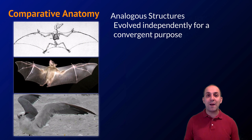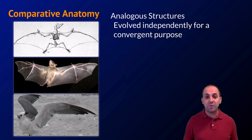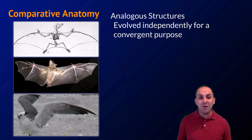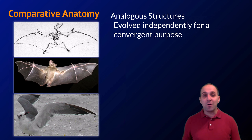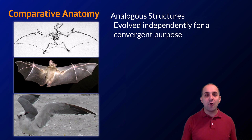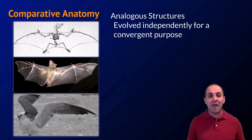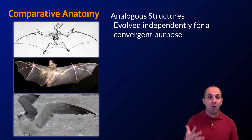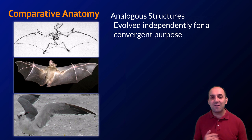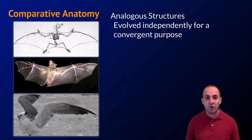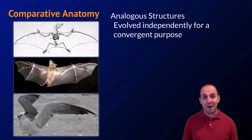Another useful piece of evidence from comparative anatomy are analogous structures — structures that evolved separately in different lineages but for a similar or convergent purpose. A good example are wings in pterodactyls, bats, and birds. In each case these wings allow flight, but they each evolved independently, as we can see in the underlying wing structure. The pterodactyl wing is hung off one long finger extension and the leg. The bat wing incorporates all fingers. The bird wing is hung off the arm bones. These very different underlying structures confirm that these wings each evolved independently.